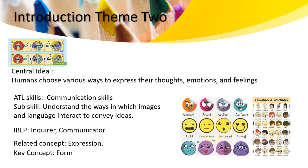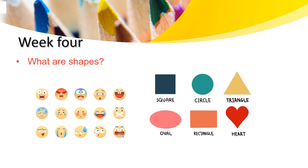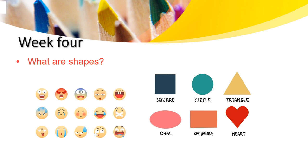We're also going to use a key concept form to focus on what is the shape. Week 4 — what are shapes? I want you to look at the image on the right and see what these are. Yes, this is a square, circle, triangle, oval, rectangle, and a heart.